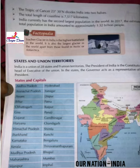The physical features of India make it a vast country. Due to the vastness of the country, it is divided into 28 states and union territories.